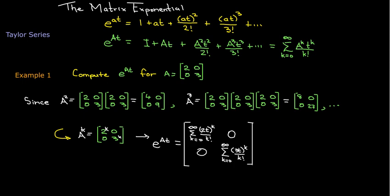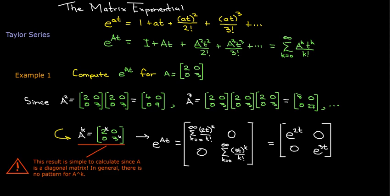That means e to the At would be a diagonal matrix where the (1,1) entry is the sum k equals 0 to infinity of (2t)^k over k factorial, and the (2,2) diagonal is the sum k equals 0 to infinity of (3t)^k over k factorial. That's just e to the power of 2t in the (1,1) diagonal, and e to the power of 3t in the (2,2) diagonal. I want to caution you that this is a very simple case because we have a diagonal matrix — that's the only reason we get this nice pattern. In general, A to the power of k does not have any simple pattern that we can determine.